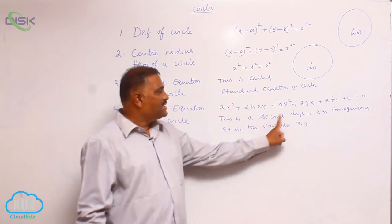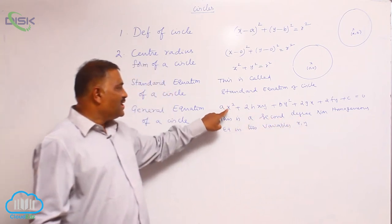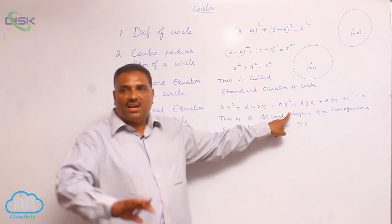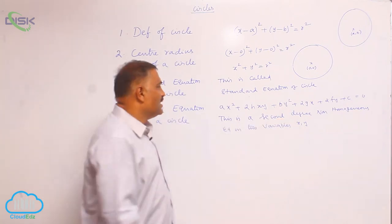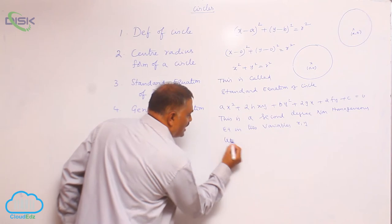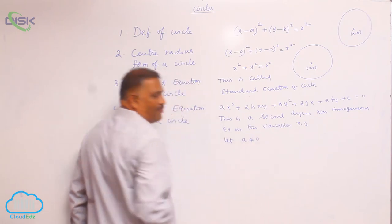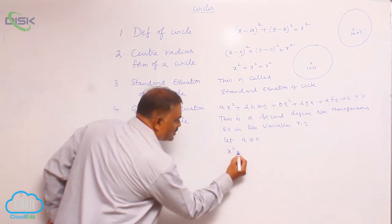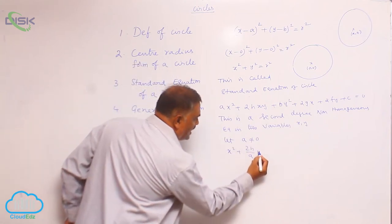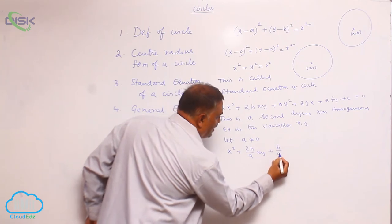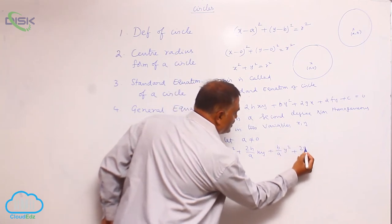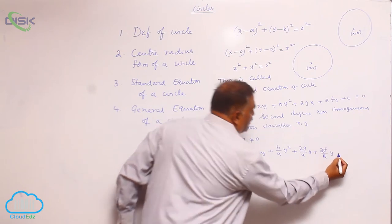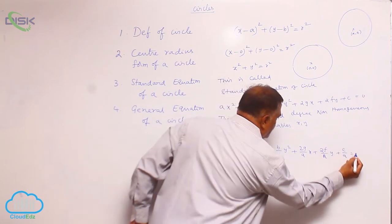This is a second degree equation, meaning the coefficients of x square, xy, and y square cannot all be zero simultaneously. Assuming a is not equal to 0, divide throughout by a. We get: x square plus 2h/a xy plus b/a y square plus 2g/a x plus 2f/a y plus c/a is equal to 0.